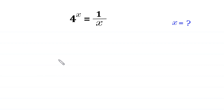Hello, welcome to how to solve this very nice exponential equation. 4 to the power x is equal to 1 over x. We need to find all possible values of x.